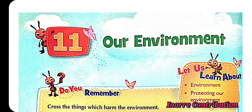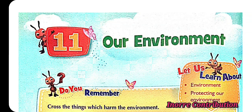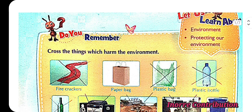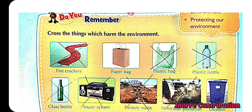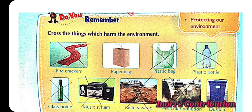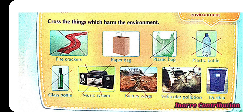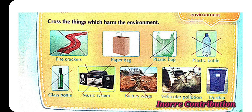Class 3 Science, Chapter 11: Our Environment. Cross the things which harm the environment. Firecrackers harm our environment. Plastic bags, plastic bottles, glass bottles, music systems spread noise pollution, factory waste, and vehicular pollution harm the environment. Whereas paper bags and dustbins take care of our environment.